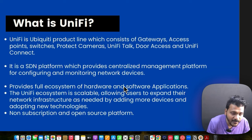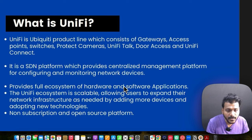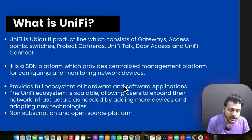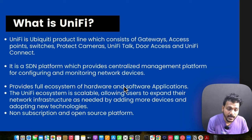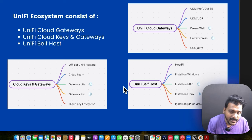UniFi is an open-source platform, unlike other vendors such as Cisco, Aruba, and Ruckus, and many other vendors. You get a benefit with UniFi — you only have to pay for the hardware; the software is free and open source. The UniFi ecosystem consists of three things: UniFi Cloud Gateways, UniFi Cloud Key and Gateways, and UniFi self-hosted.